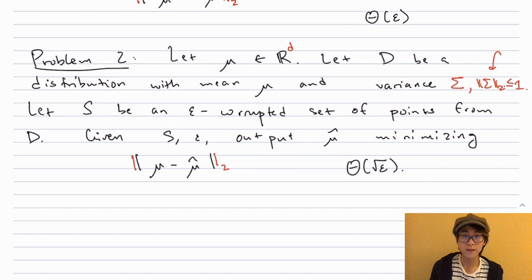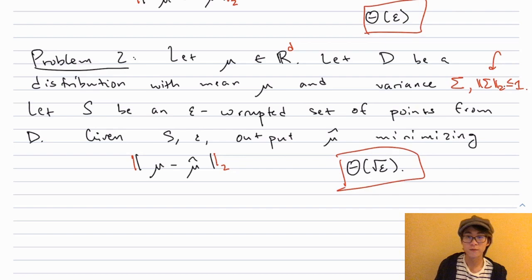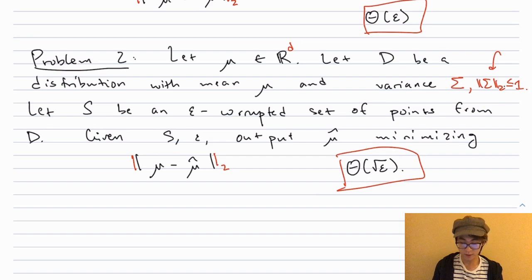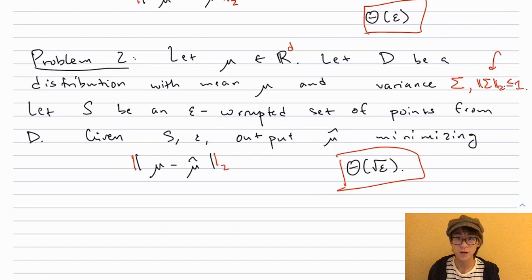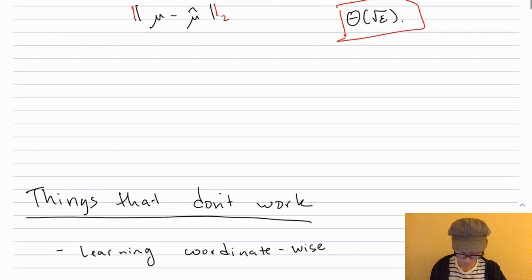It will turn out that for both of these problems, the same error rates apply asymptotically. Given enough samples, we can achieve θ(ε) error and θ(√ε) error for problems one and two respectively. However, doing so will be a little more complicated and require more nuance. The lower bounds for these problems are not very hard—they follow almost immediately from the one-dimensional learning problems. The real challenge is to achieve the corresponding upper bounds. To see why, let's analyze several natural estimators and see why they don't achieve these rates. In particular, they will get rates which scale poorly with the dimension.